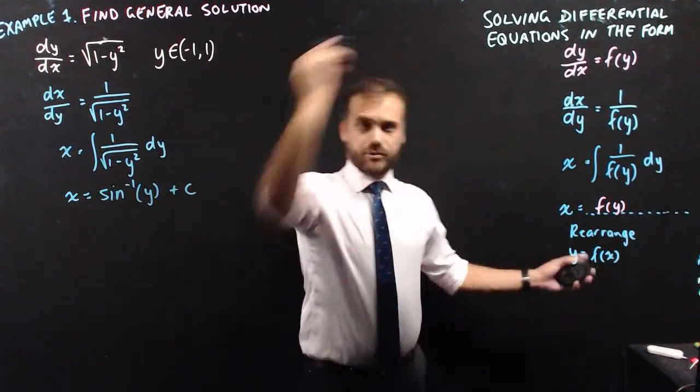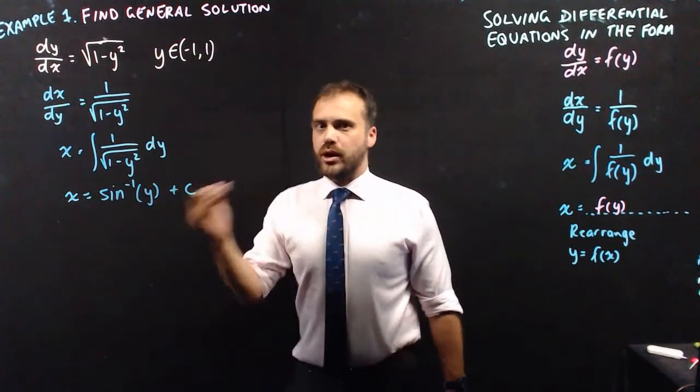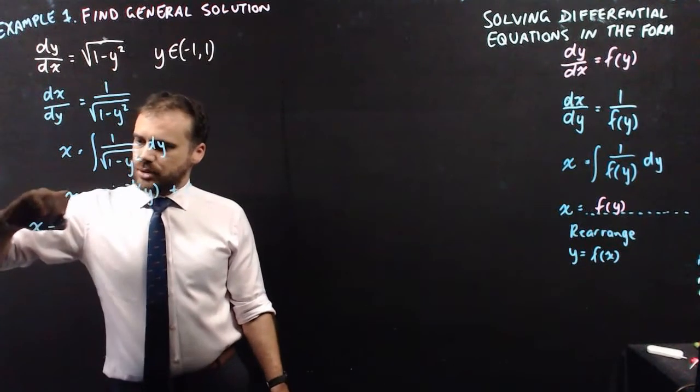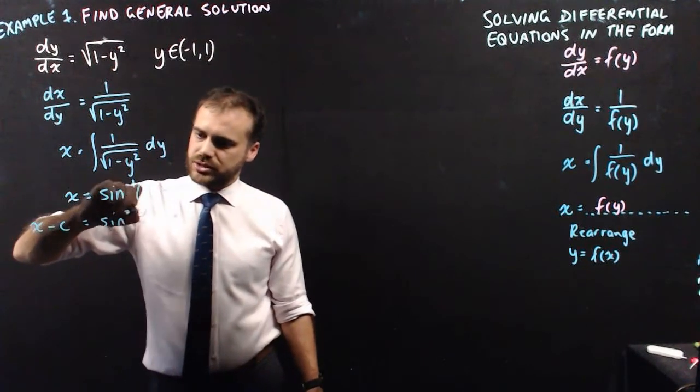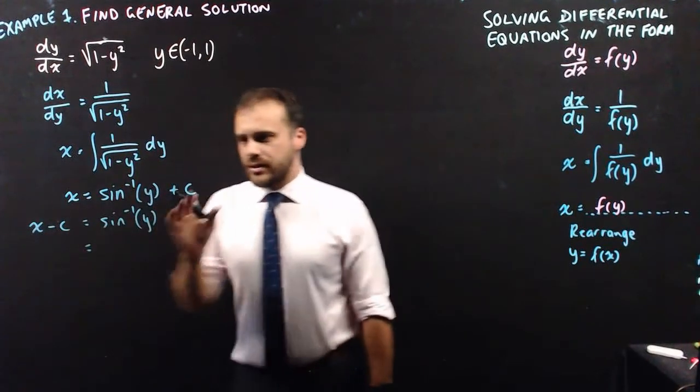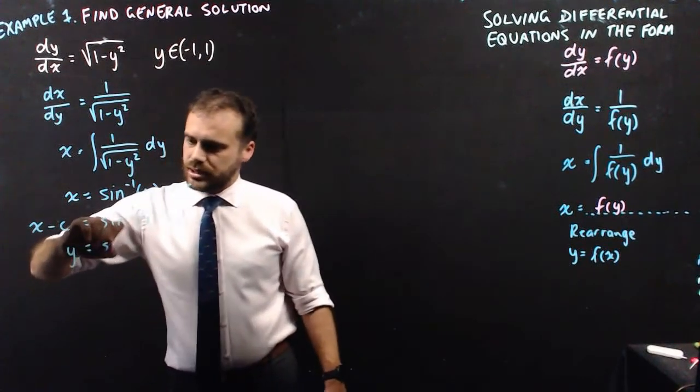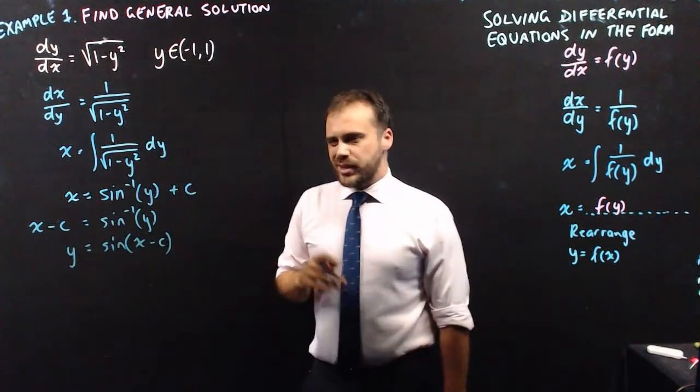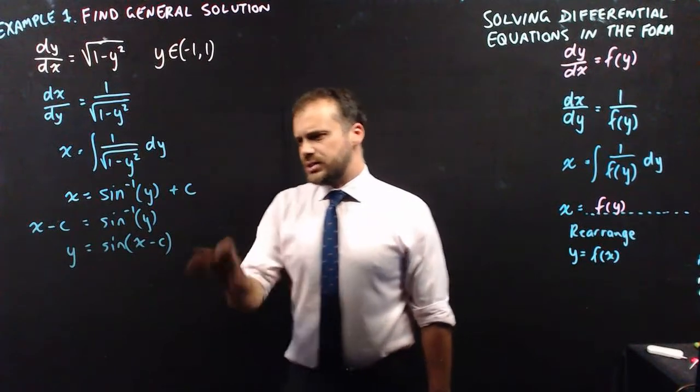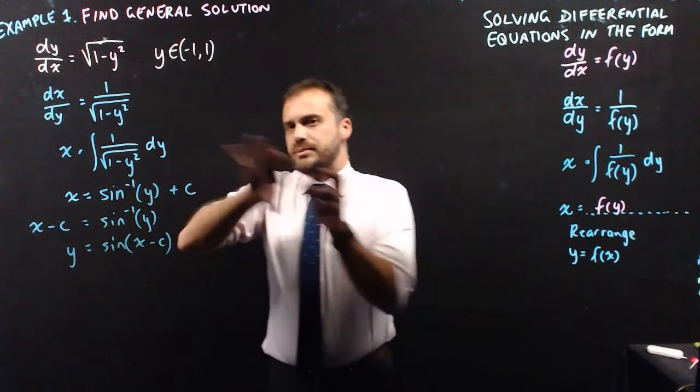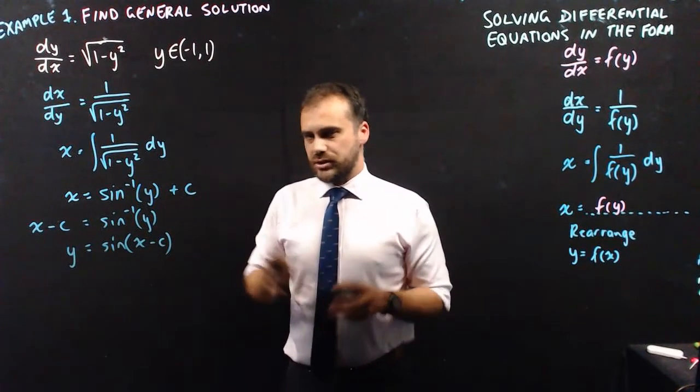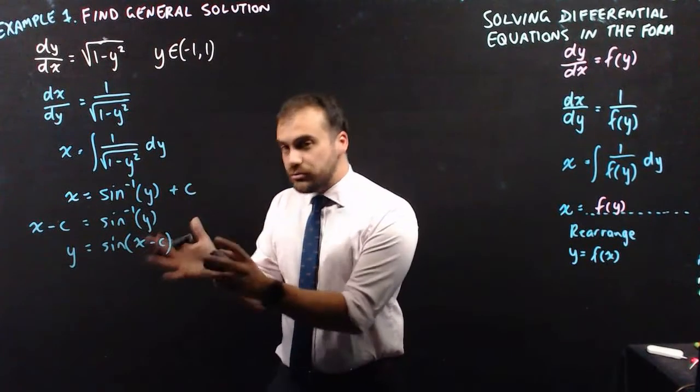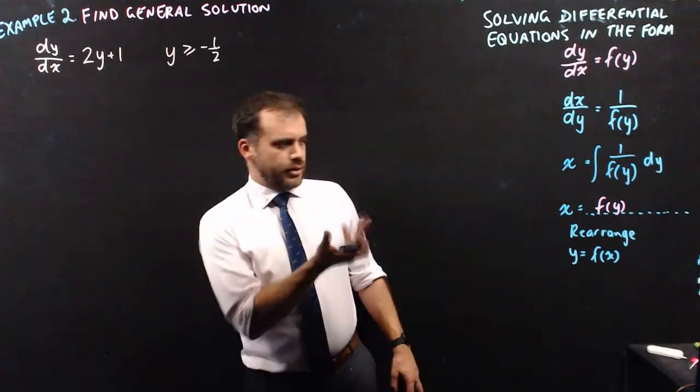So we've done all of that. We've now got x equals a function of y. Our next step is to rearrange, and then we'll have y equals something. The rearrange is going to be x minus c equals inverse sine y. And then that means that y is going to be sine of x minus c. This is really the first time that you've seen c sort of end up sitting inside of a function. This is the answer, by the way. I am finished. This is the solution, the general solution of our question.